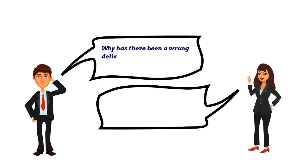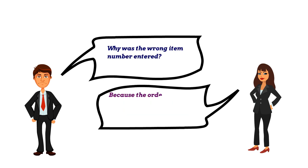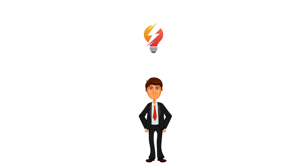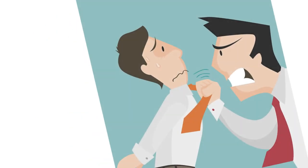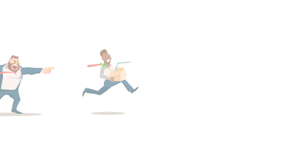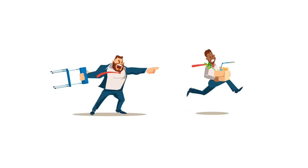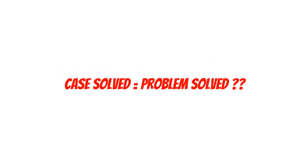Why has there been a wrong delivery to our customer? Because the wrong item number was entered. Why was the wrong item number entered? Because the order entry number was entered incorrectly by customer service. Well, that sounds very much like the cause for the problem. Let's call the person from the customer service and give them a warning or better yet, let's fire the person right away. Case solved, problem solved.